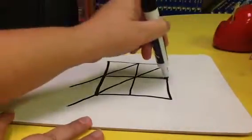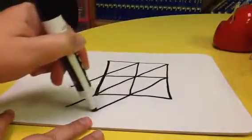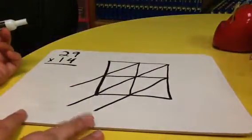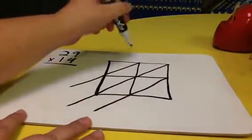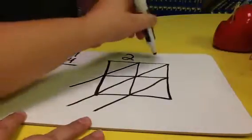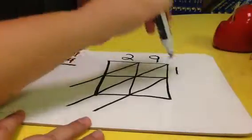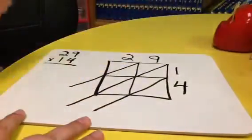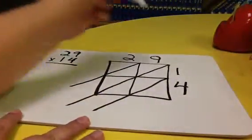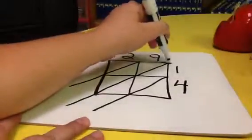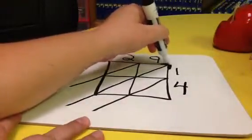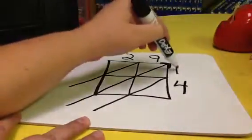And then when we put our numbers up top we just put 29, and then along this side we'll put 14. And I told the kids our first starting point is right here, this corner, so we'll do 1 times 9 which is 9.